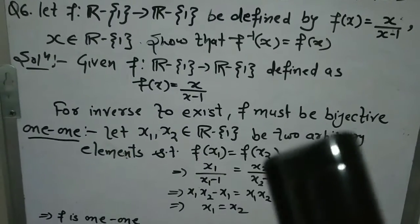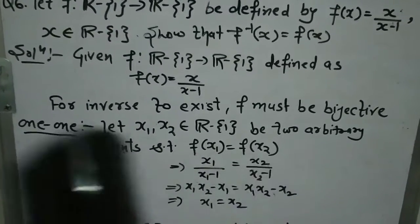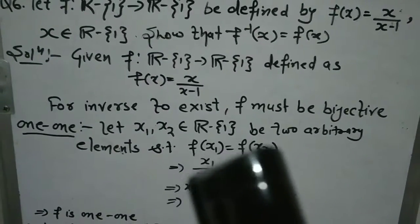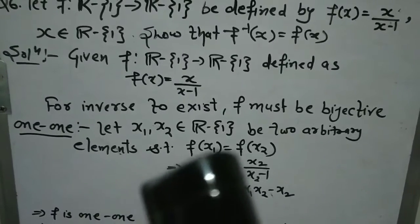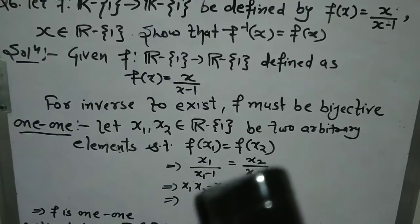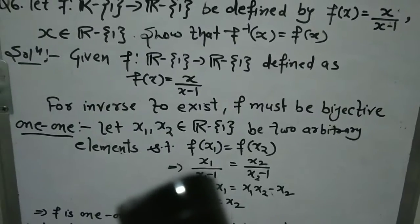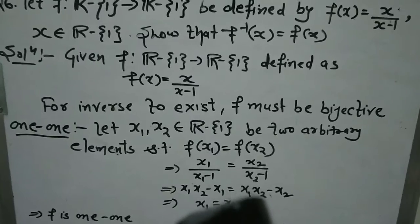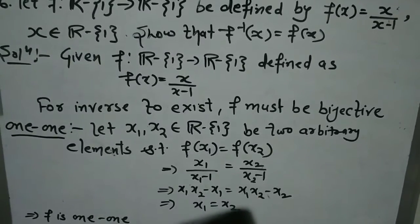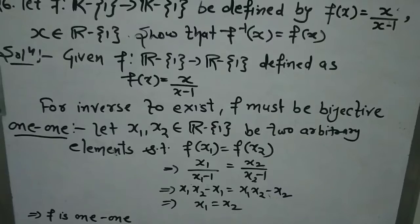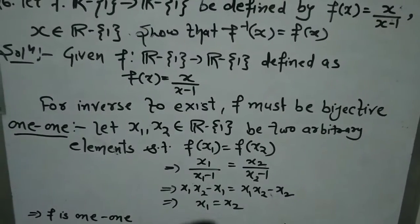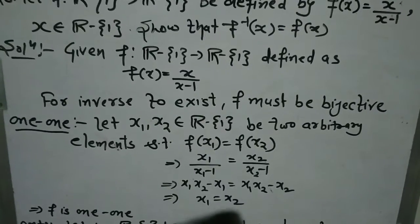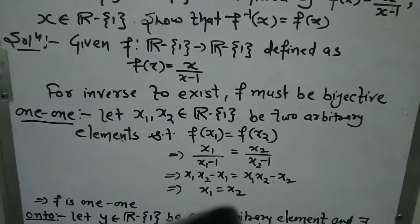f is a function from R-{1} to R-{1} defined by f(x) = x/(x-1). For inverse to exist, f must be bijective — that means one-one and onto. For one-one: Let x₁, x₂ belong to R-{1} be two arbitrary elements such that f(x₁) = f(x₂). Then x₁/(x₁-1) = x₂/(x₂-1). Cross multiplying and cancelling terms, we get x₁ = x₂. So the different elements we picked with the same images turned out to be equal — the function is one-one.